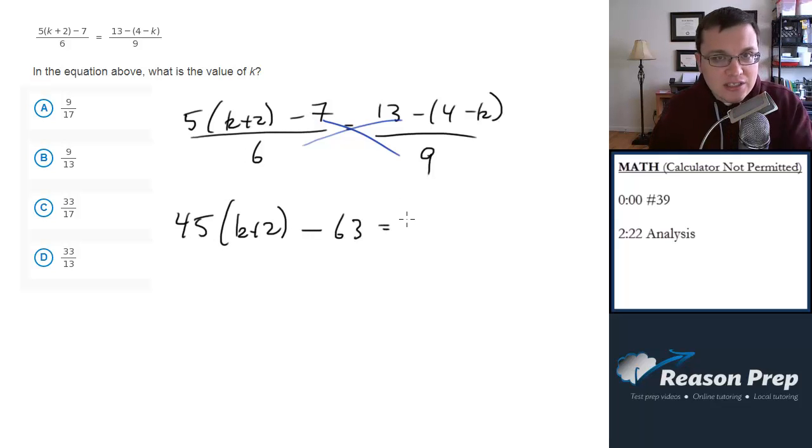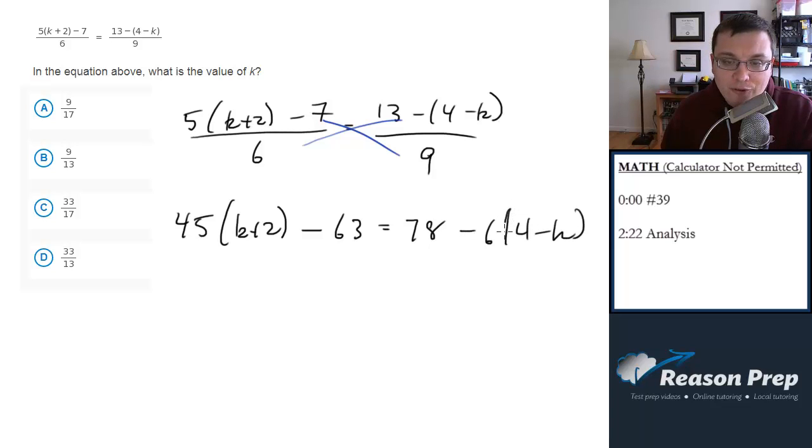So by the way, just as a side note, you've got to know your times tables here. If you don't know your times tables, you're not going to have a calculator on hand to help you. 6 times 13 is 78 minus 6 times 4 minus k. Be very careful with distributing your numbers correctly, 6 and 9.